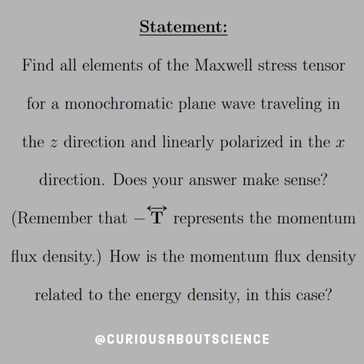Hope you didn't forget the things we touched on in Chapter 8 with all the density talk and Maxwell's stress tensor, because now it's back. The statement is: find all elements of the Maxwell's stress tensor for a monochromatic plane wave traveling in the z direction and linearly polarized in the x direction. Does your answer make sense? Remember that negative T represents the momentum flux density. How is the momentum flux density related to the energy density in this case?